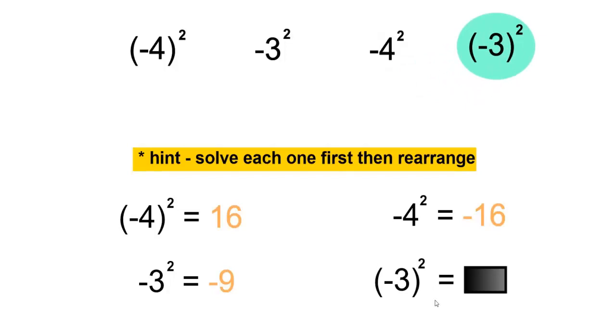And finally, in brackets, negative 3 to the power of 2 is negative 3 times negative 3, which is positive 9.